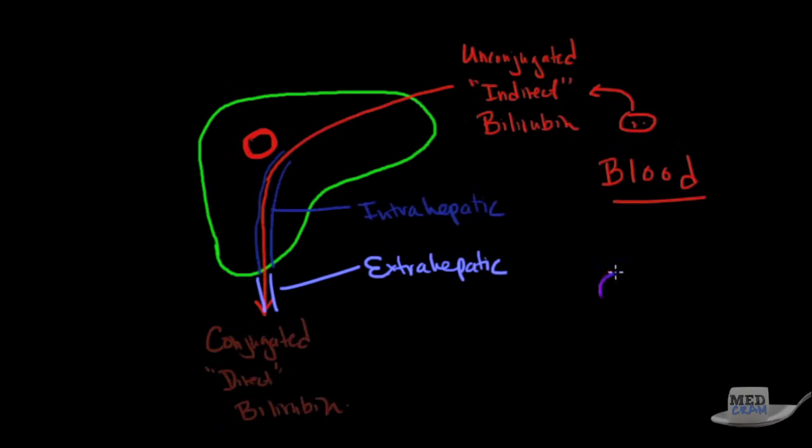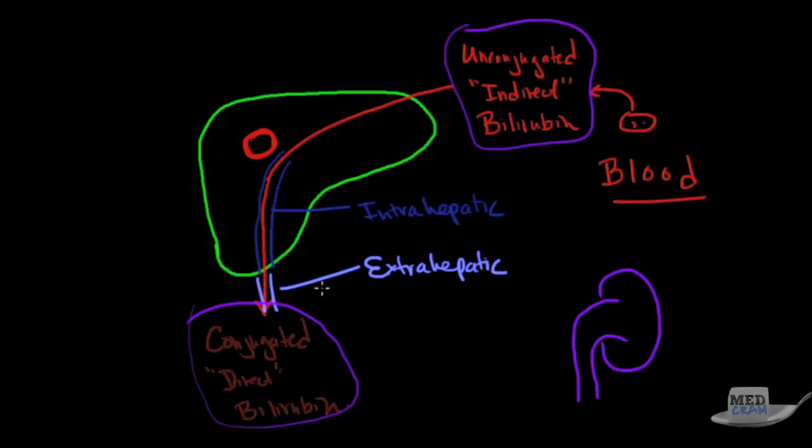Now the kidney also fits into this. The conjugated bilirubin and not the unconjugated bilirubin can be excreted through the kidney. If for some reason there is a blockage here in the extrahepatic or in the intrahepatic ducts that are supposed to get rid of the bilirubin and the bile acids,